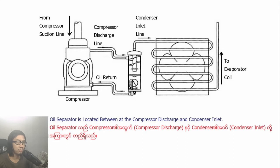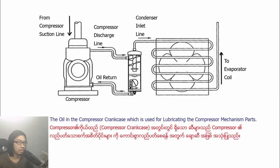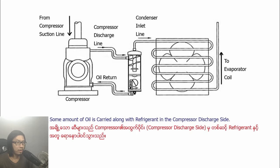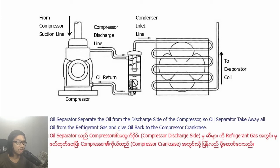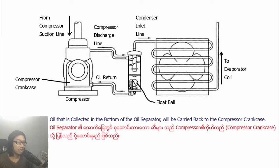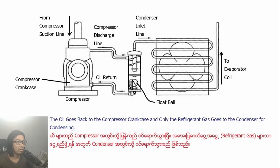The oil separator is located between the compressor discharge and condenser inlet. The oil in the compressor crankcase is used for lubricating the compressor mechanism, but some amount of oil is carried along with the refrigerant on the compressor discharge side. The oil separator separates and takes away all oil from the refrigerant gas and returns the oil back to the compressor crankcase. Oil collected at the bottom of the oil separator is carried back to the compressor crankcase, and only the refrigerant gas goes to the condenser for condensing.